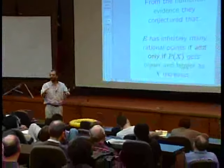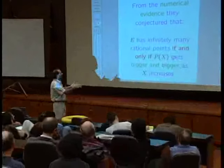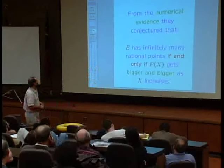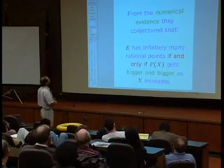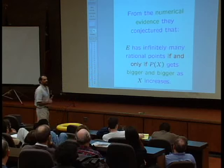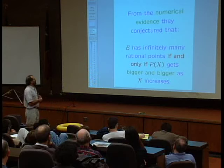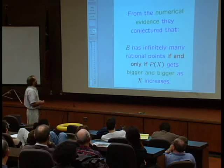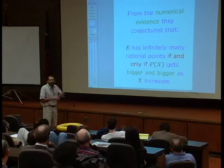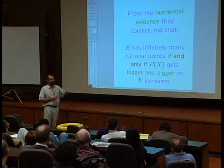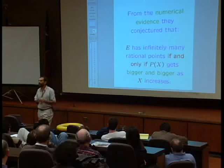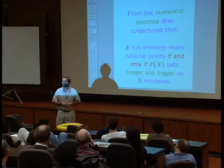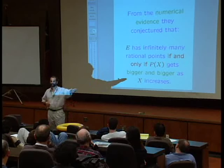And what they discovered is that every time the curve E had infinitely many solutions in rational numbers, then this product P(X) got bigger and bigger. Whereas if the equation had no solutions, or finitely many solutions, then this product seemed to stay basically flat. So for the purpose of this talk, I did exactly that experiment with two elliptic curves, just to show you what this looks like in practice.